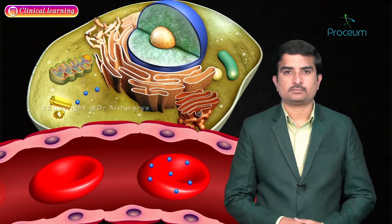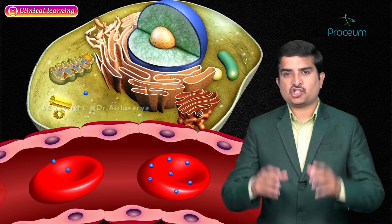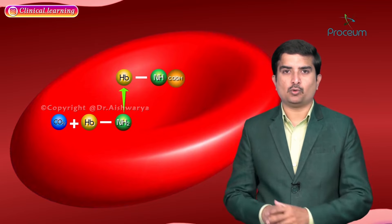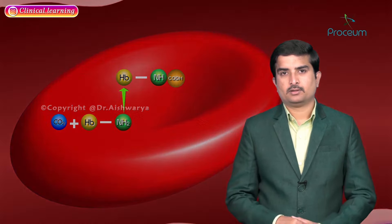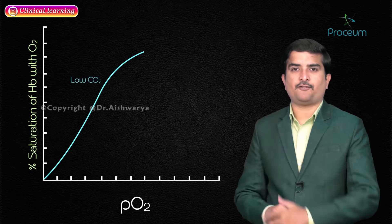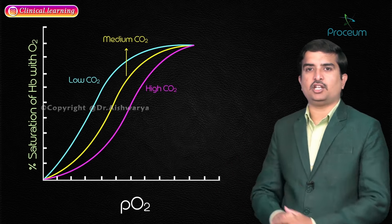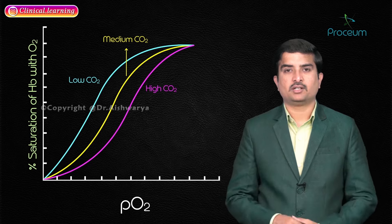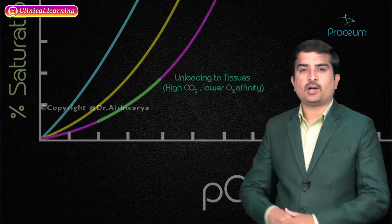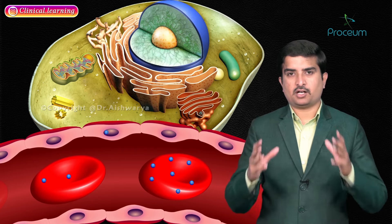About 20% of carbon dioxide is transported in the blood as carbaminohemoglobin — chemically bound to the amino group of hemoglobin. Binding of carbon dioxide to hemoglobin decreases the oxygen affinity of hemoglobin, causing a right shift of the hemoglobin-oxygen dissociation curve. This is called the Bohr effect, and it promotes unloading of oxygen to the tissues.